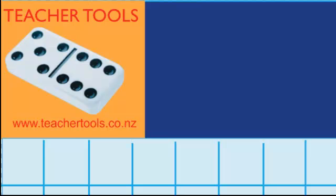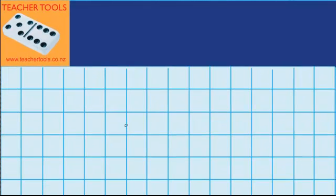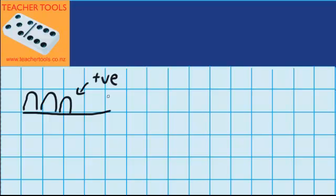Welcome to Hills and Dales. In this lesson I'm learning to add and subtract positive and negative numbers. We're going to imagine that hills are positive numbers, and holes or dales are negative numbers.